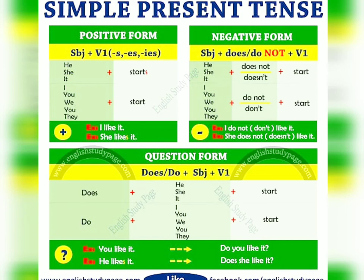There are rules for writing s, es, or ies in positive/affirmative sentences depending on the subject and verb. With a singular subject, you add s, es, or ies to the verb. If the verb ends in a consonant, add s. If it ends in a vowel or an 'o' sound, add es. If the verb ends in y — like 'fly' — remove the y and add ies. If the subject is plural — I, we, you, they — you use the simple first form of the verb without any s or es.